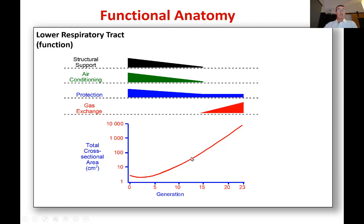With diseases, that can change. When you look at diseases like asthma or chronic obstructive lung disease, these airways start to get narrow, so that curve gets flattened.